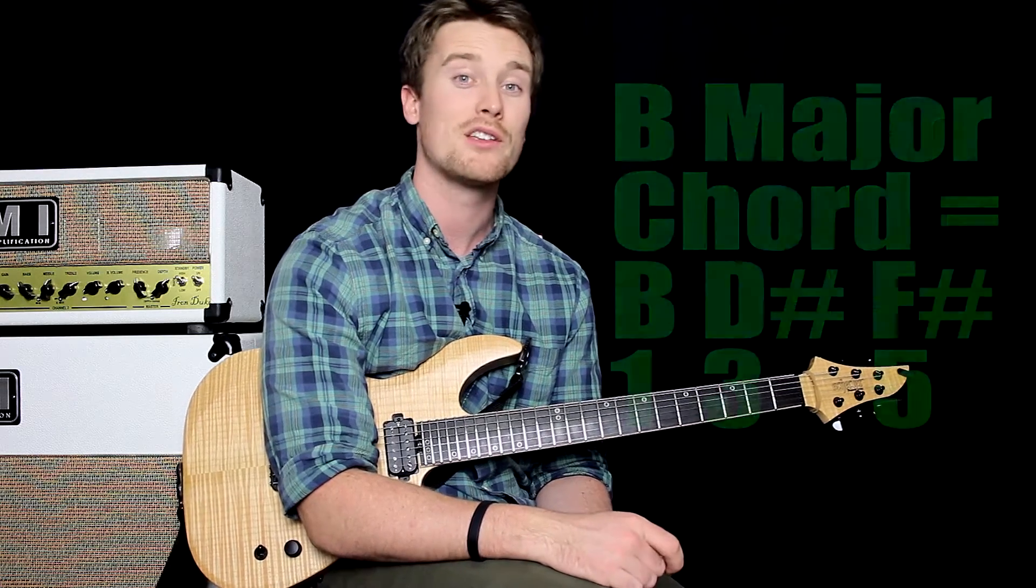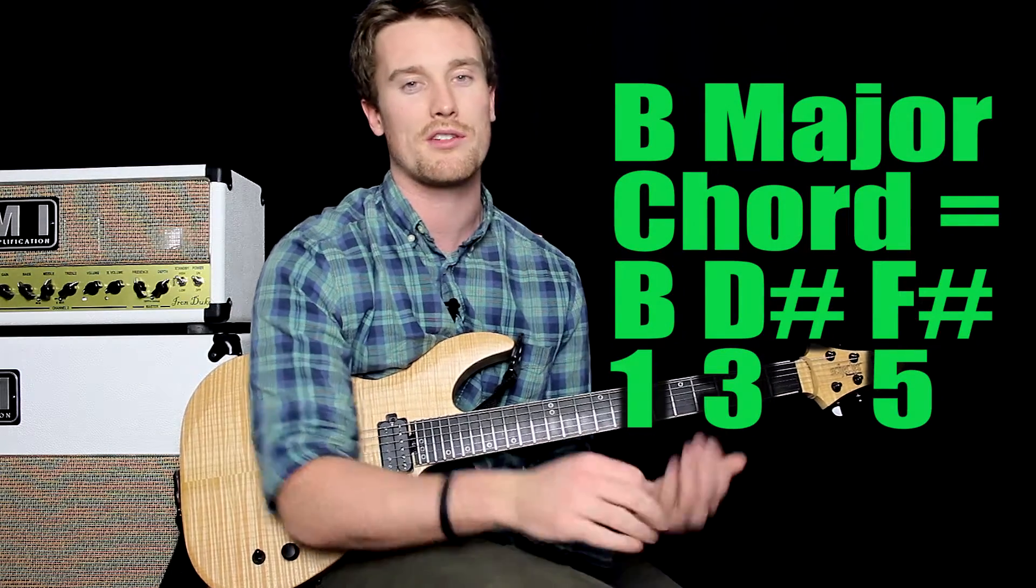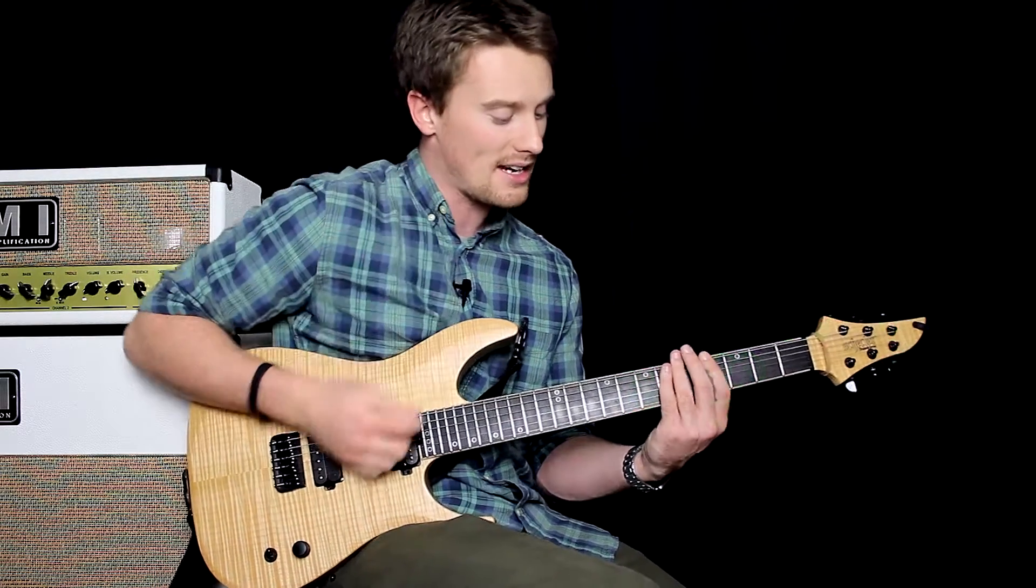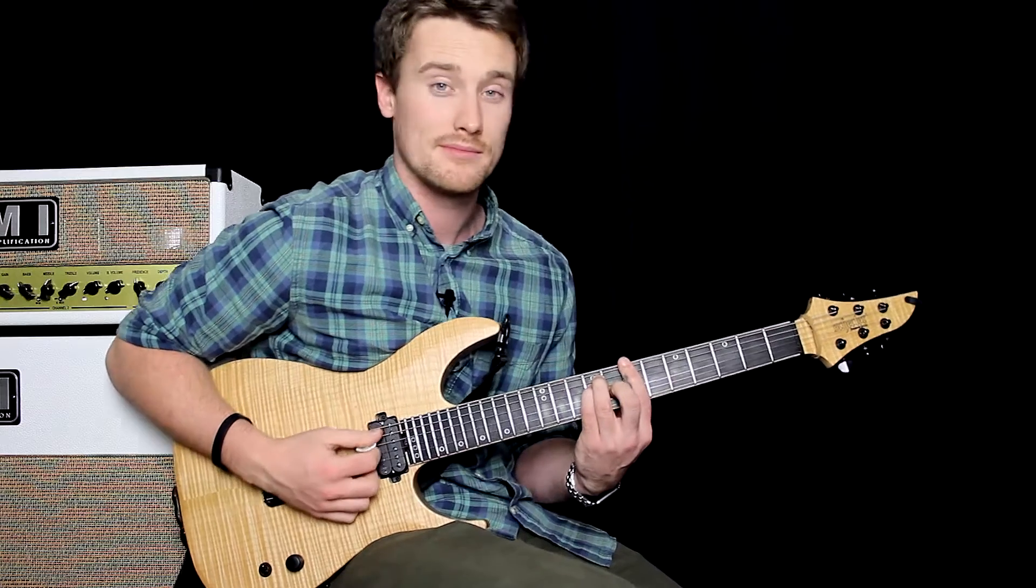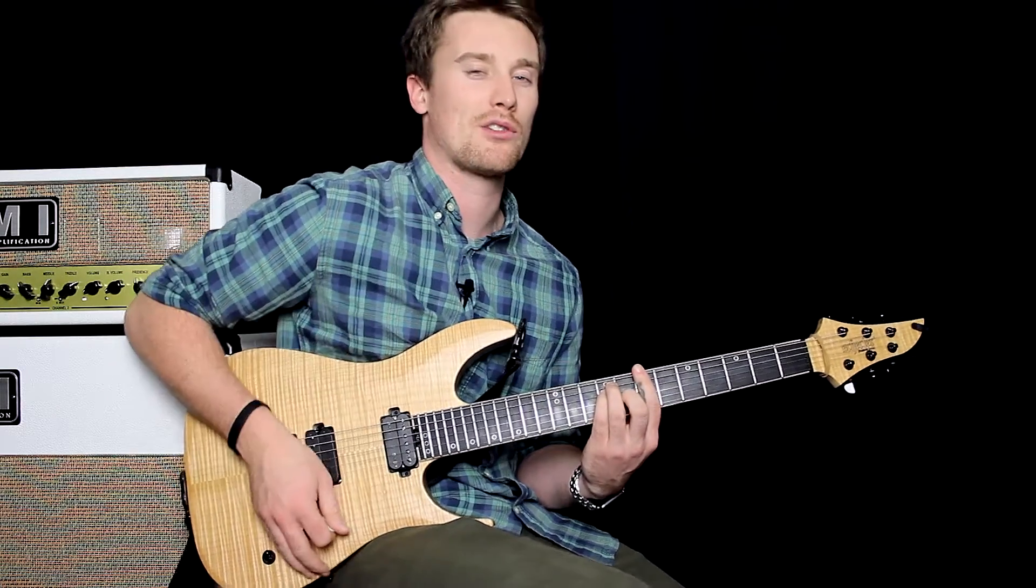So in this example, B major, you've got B, D sharp, F sharp. That's all that is, that's all the theory that you need to know, and to the ear it sounds like a happy chord.